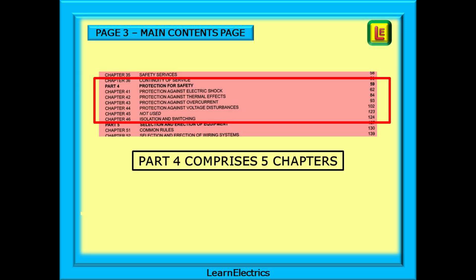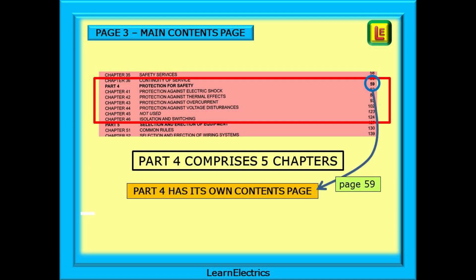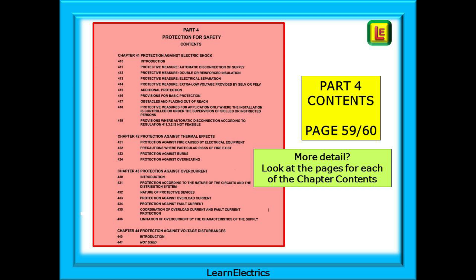Page 3 is the main contents page. It lists all the parts of the book and gives some very brief information about each part. This is my go-to page when I want answers. You will notice that Part 4 comprises five chapters and it also tells us that Part 4 has its own contents page on page 59. So let's go there now. This is page 59, the Part 4 contents page, and it gives us much more information than page 3. This allows us to start homing in on the answers as you will see.